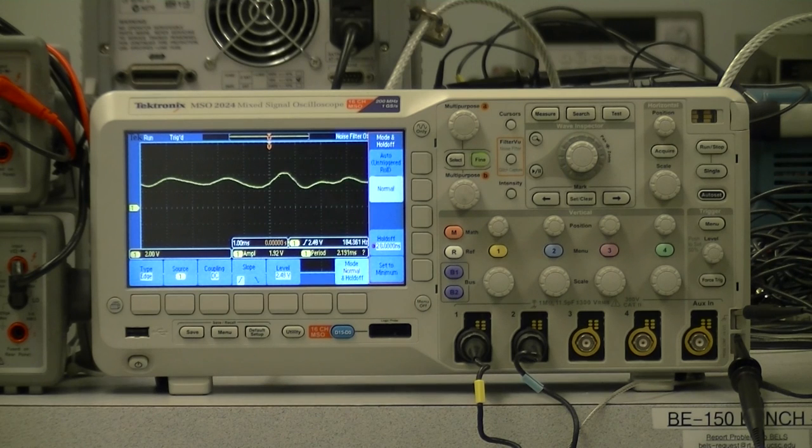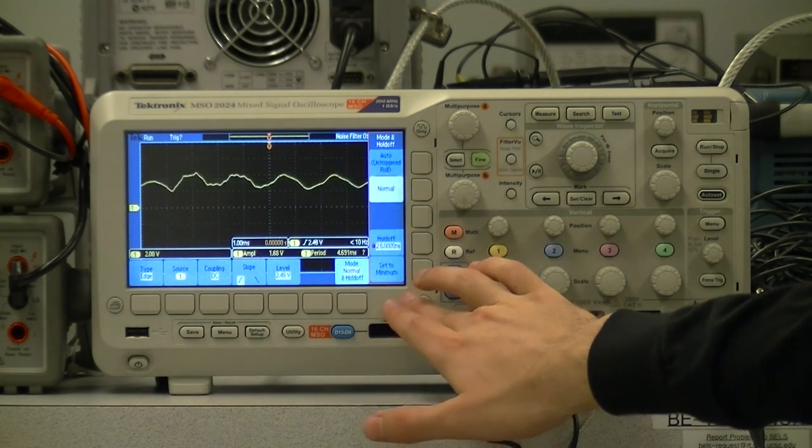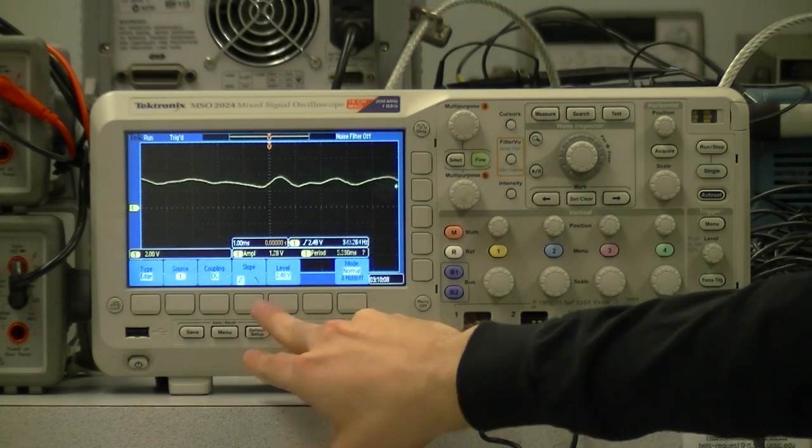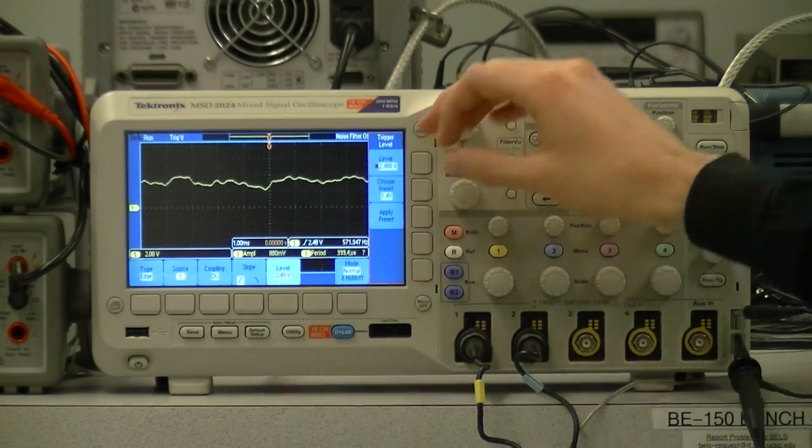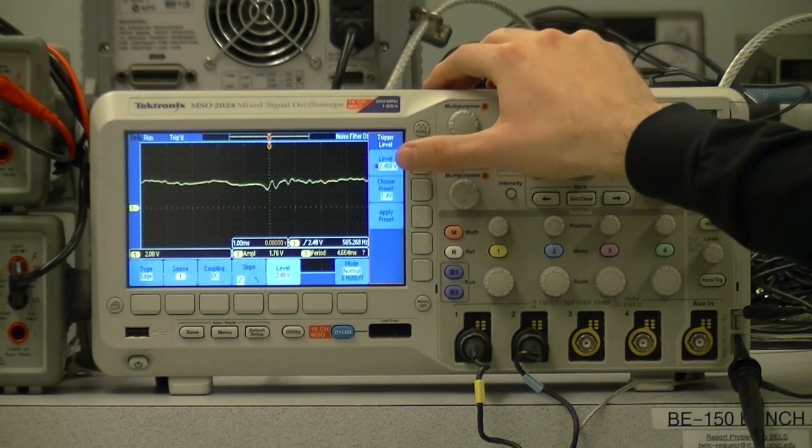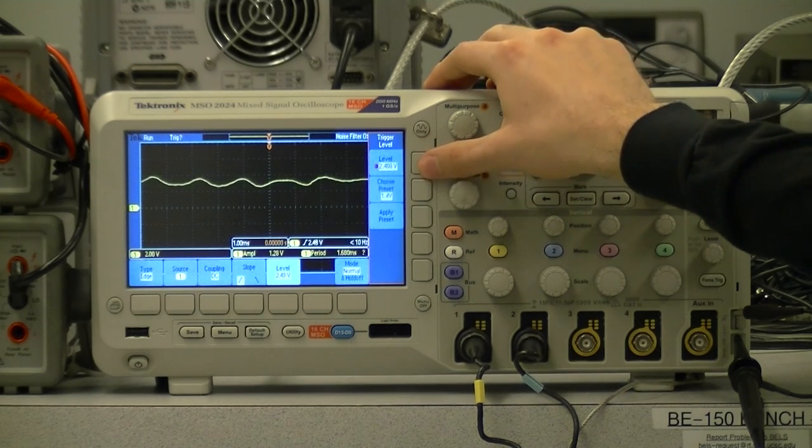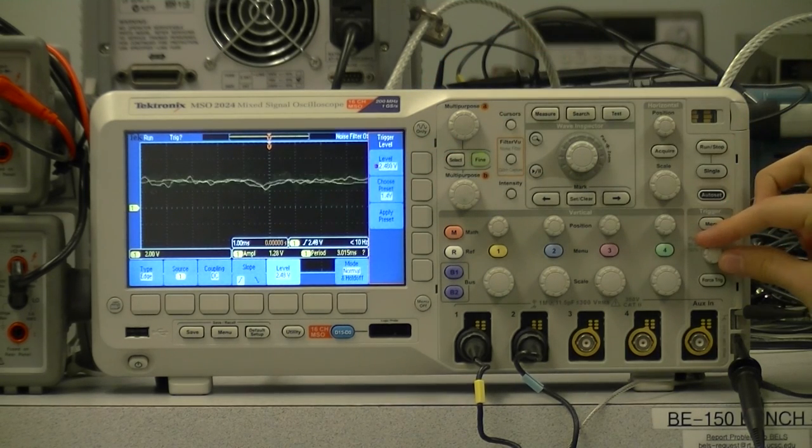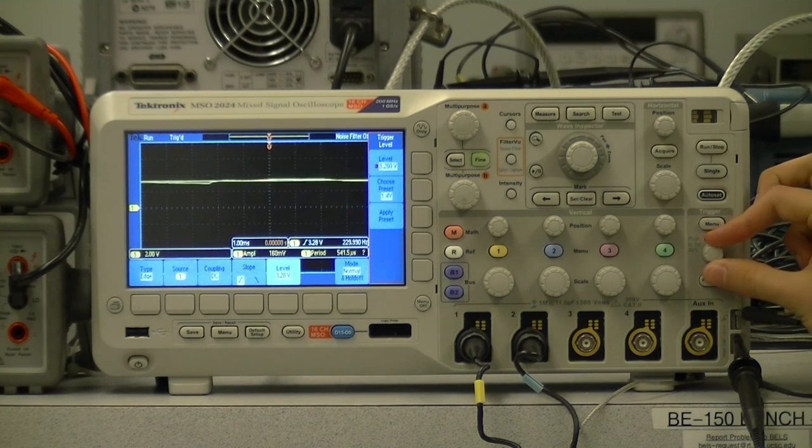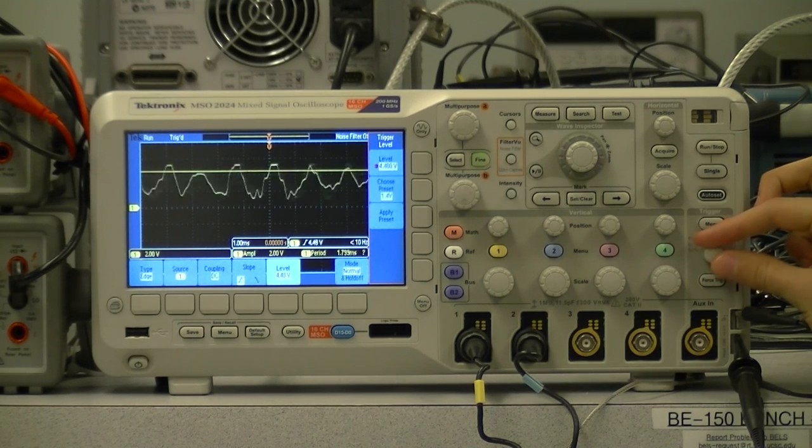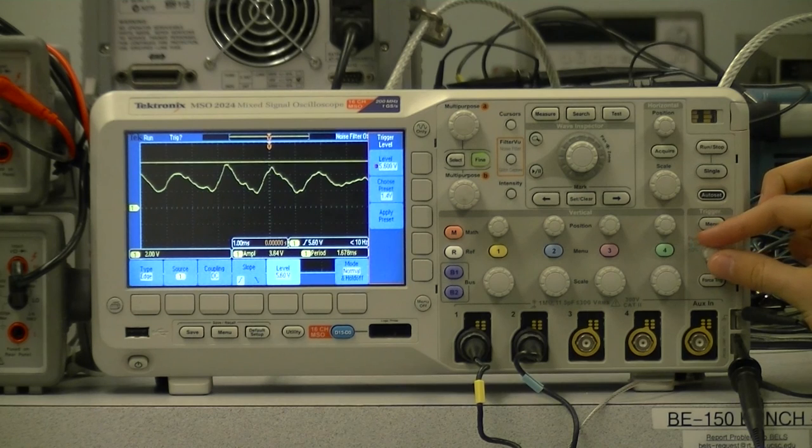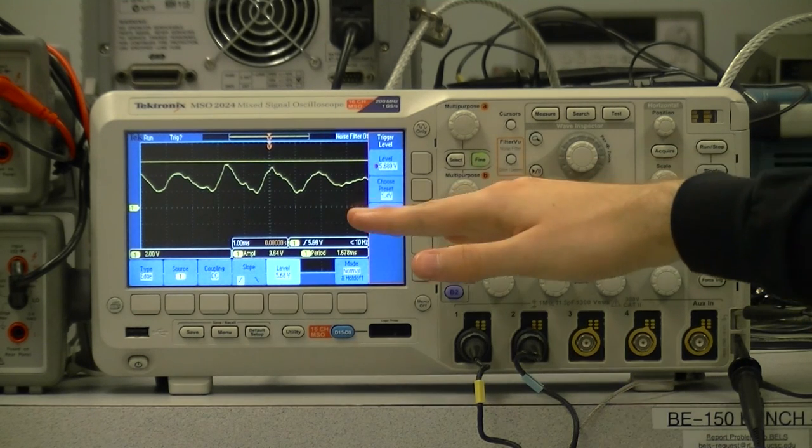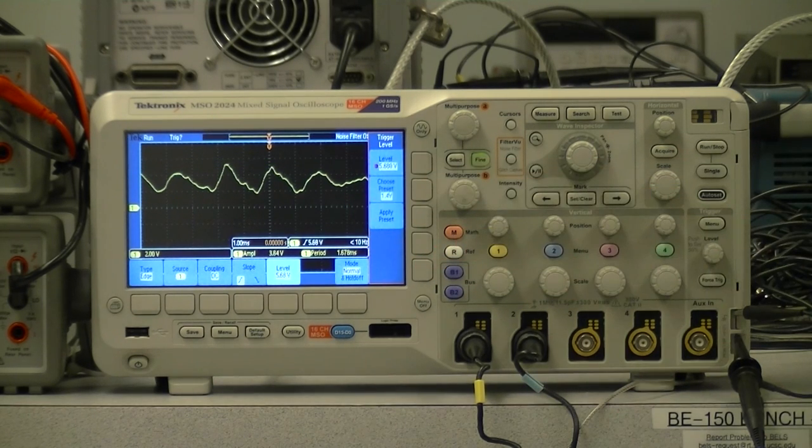Let's close that menu and look at the level option. If we adjust the level at which it detects a slope by pressing here and rotating this knob, we can now see a line on the screen for what level the signal has to cross before it will trigger. If we set it very high, the signal will basically never get there, so it will never trigger.